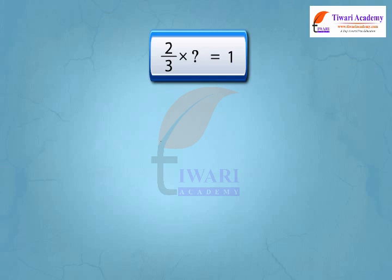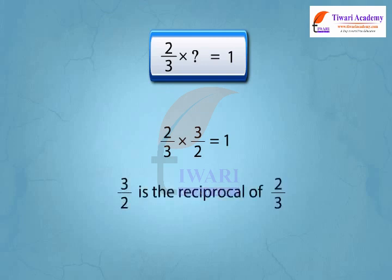See there, if we multiply 2 upon 3 by 3 upon 2, we get the product as 1. We can say 3 upon 2 is the reciprocal of 2 upon 3.